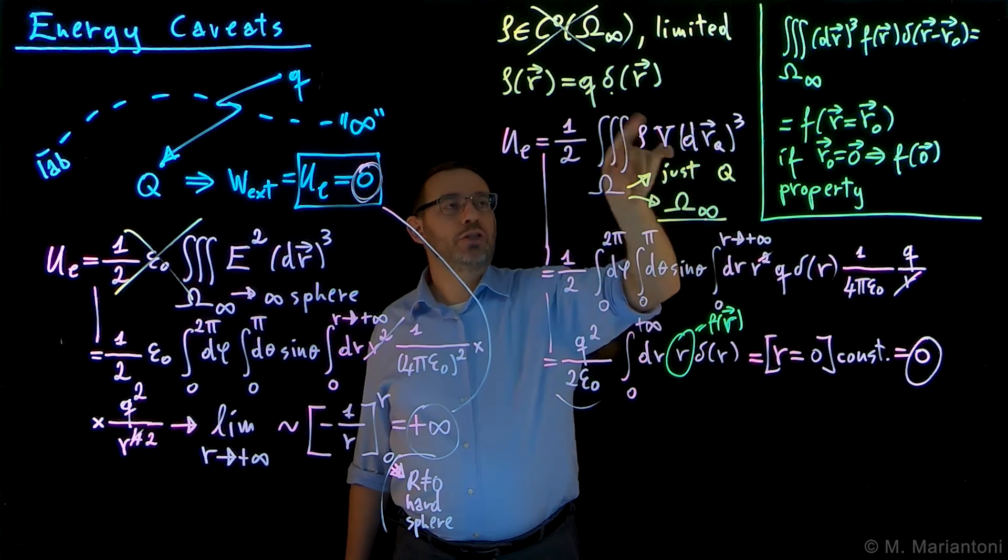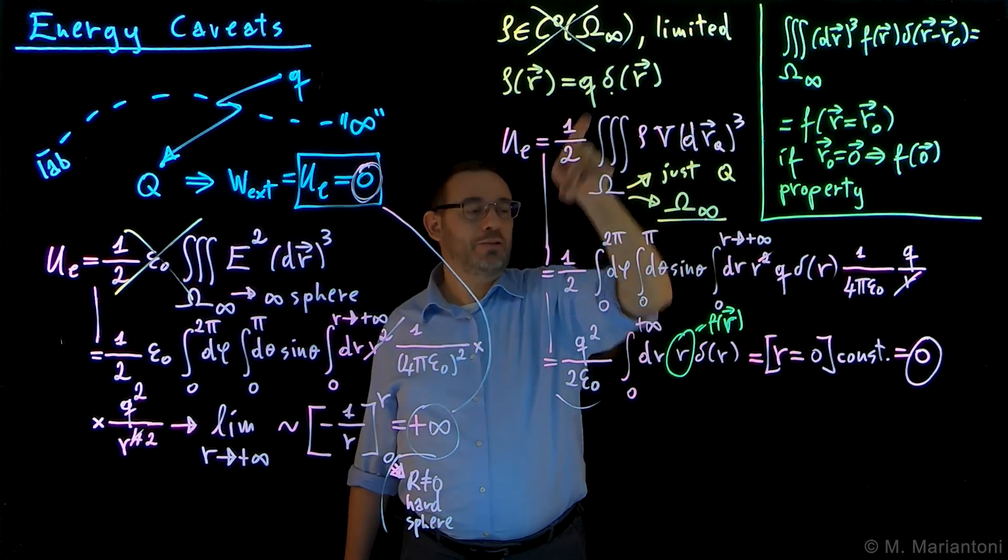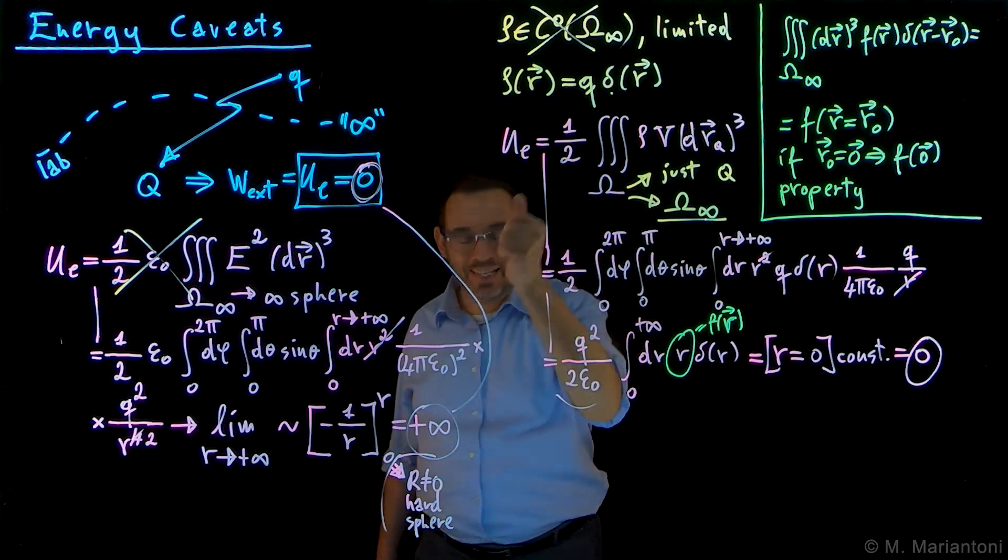Instead, you can always use the generic expression integral of rho V, which, using the Dirac delta notation, gave us zero as a result. That's it!